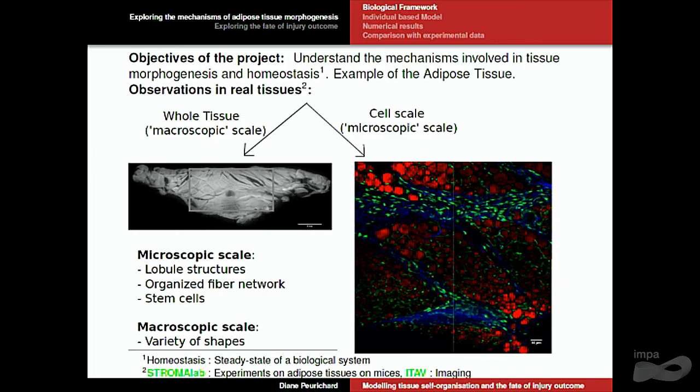We were interested in understanding the mechanisms involved in adipose tissue morphogenesis. Morphogenesis is a term that refers to all the mechanisms in place which enable a biological system to reach its equilibrium. You start with nothing basically, or a lot of things that will self-organize and give specific structures that are then maintained all along the tissue life.